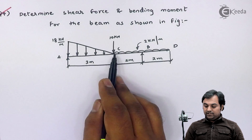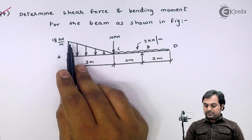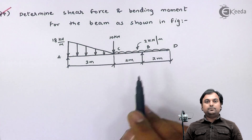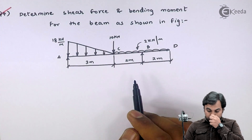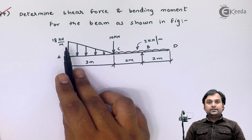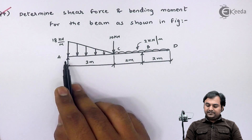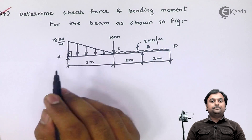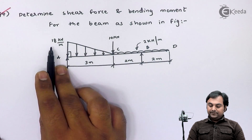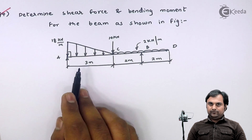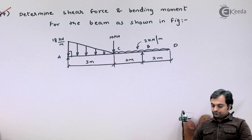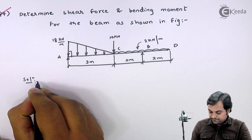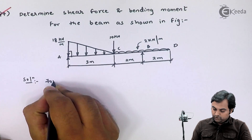From A to C we have a loading called uniformly varying load (UVL), and from C to D we have uniformly distributed load (UDL). Whenever we have a uniformly varying load, we treat it like a right-angle triangle and convert the intensity into the value of load. In the solution I will convert this UVL into a point load.